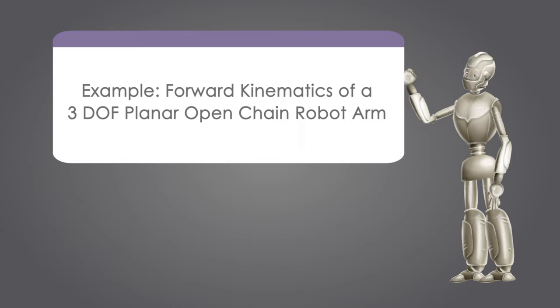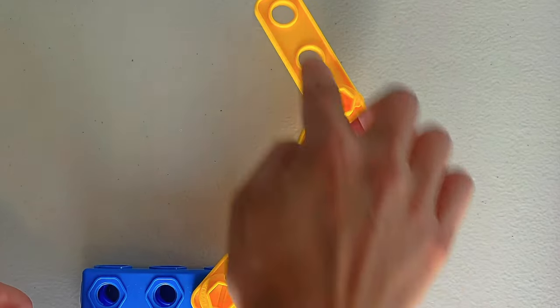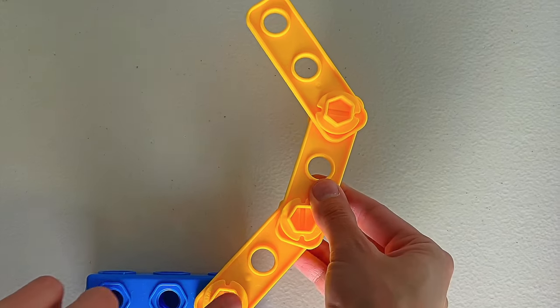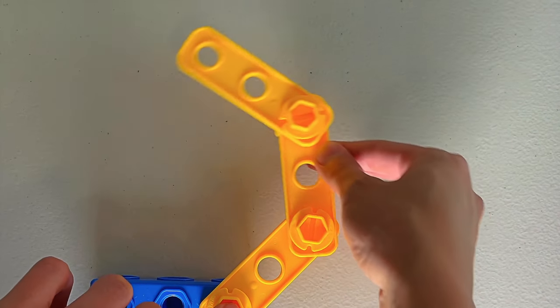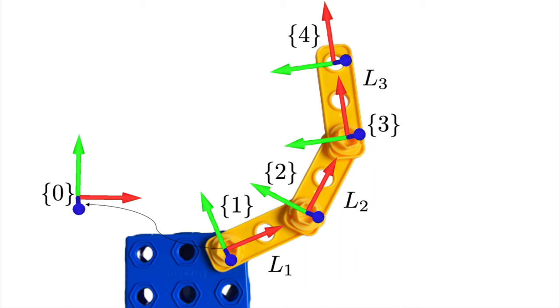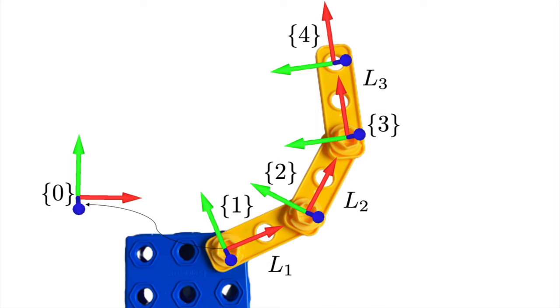Rather than going into mathematical details, let's get right into the point with an educational example. Consider a 3DOF planar open chain robot arm modeled using STEM building blocks. The three degrees of freedom of this robot are its three joints, and the positive rotation direction follows the right-hand rule. This diagram shows the robot once the coordinate frames, joints, and link lengths are identified. L1, L2, and L3 are link lengths.